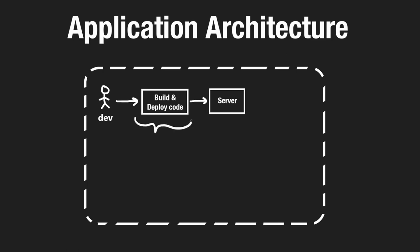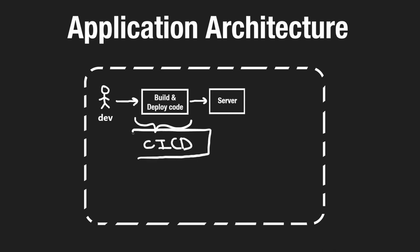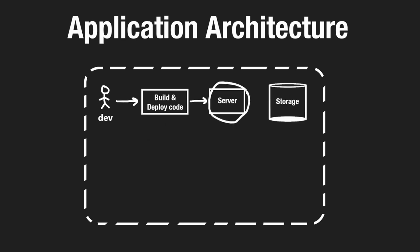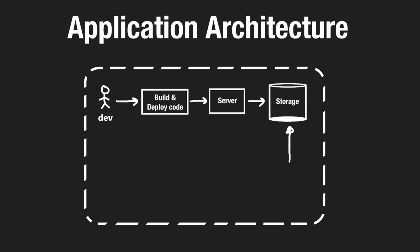There's usually an intermediate step before code reaches a server — it has to be built and deployed, either on the dev's local machine or more commonly on a CI/CD server (continuous integration, continuous deployment). Our server also needs to store data, so we have some type of external storage mechanism — it could be a database or many other options. This is our persistent storage, potentially running on its own computer and connected over a network.